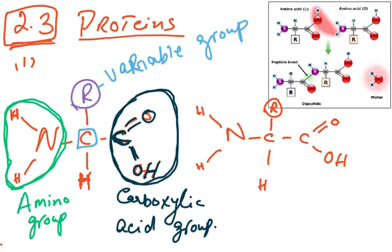The central carbon also has a hydrogen attached to it, and an R group — R stands for residual group. This is the variable group that changes between different amino acids.